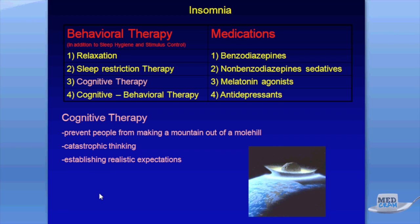Cognitive therapy is about preventing patients from making a mountain out of a molehill — addressing catastrophic thinking. This is the type of patient who can't sleep and thinks: 'This is a disaster, I have a meeting tomorrow, I'm going to lose my job, I'm going to die young.' That thinking is not conducive to falling asleep. We need to deconstruct that perpetuating factor by pointing out: you haven't slept well for months and you're still alive and still employed. By deconstructing the catastrophization, we reduce the anxiety patients associate with the bedroom.